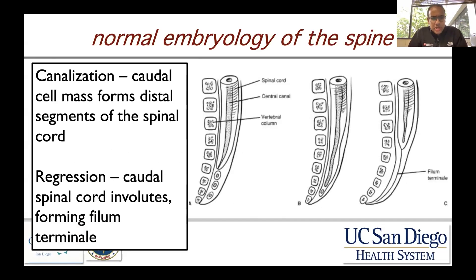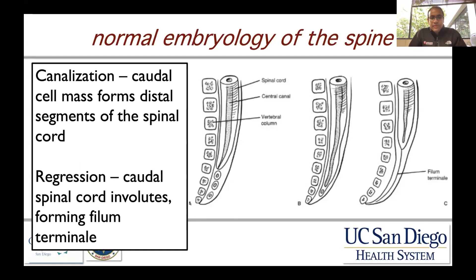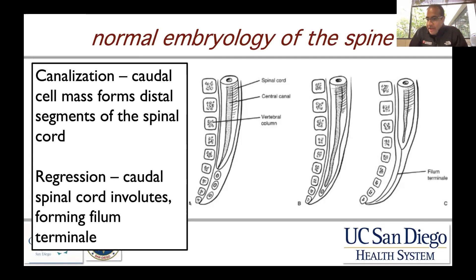Canalization of the spine involves the caudal cell mass, which forms the distal spinal segments as well as the nerves that accompany these segments of the spinal cord. Regression refers to involution of a partial aspect of this caudal cell mass, which involutes and forms the filum terminale — the distal aspect of the spinal cord — which does not routinely have function in it.